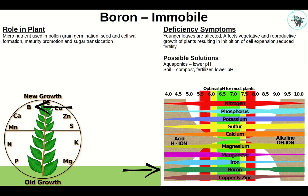Boron is an immobile micronutrient used in pollen grain germination, seed and cell wall formation, maturity promotion, and sugar translocation. Because it's immobile, you'll see it in the new growth first. It affects the vegetative and reproductive growth of plants, resulting in inhibition of cell expansion and reduced fertility. In aquaponics: lower the pH. In soil: compost, fertilizer, and lower the pH. Boron availability drops drastically below pH 5 and starts declining around pH 7.2.